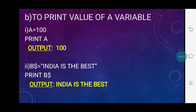To print the value of a variable: for example, a = 100. This is a let statement because we are assigning a value to the variable — a is the variable, = is the assignment operator, and 100 is the value. Now, to display the value of variable a, we use the print statement: print a, and we will get the output 100.